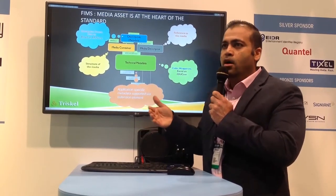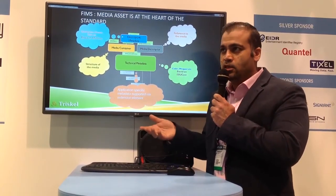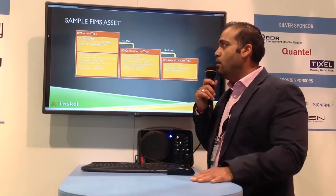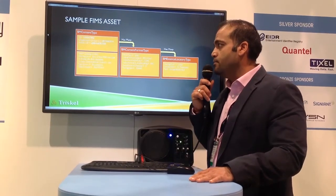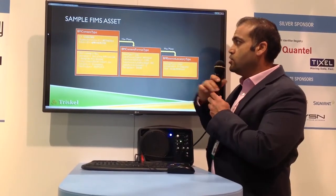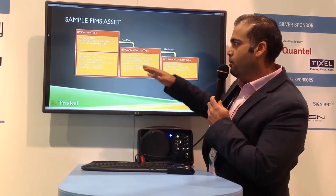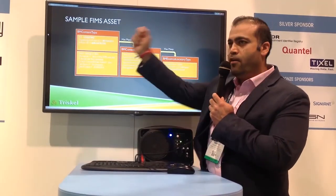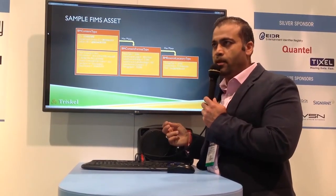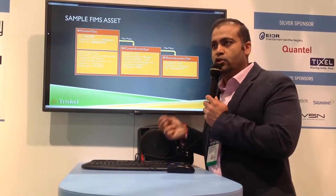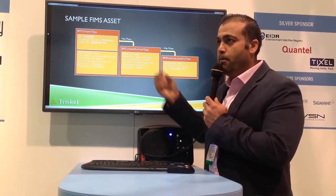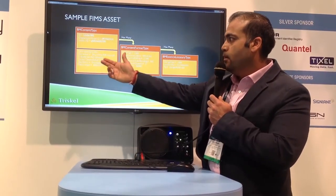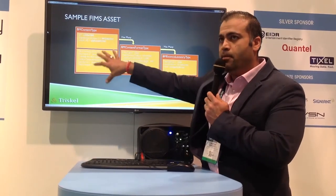Each file has its own technical metadata. The proxy is an MP4 with a different codec versus the H.264 for the MXF, et cetera. Here's an example of a sample FIMS asset representing the previous slide. Within an organization, you could have a unique identifier for the media so you can refer to a video later and find it. You could have a title, description, creator, genre, and created date — all within BMO content.